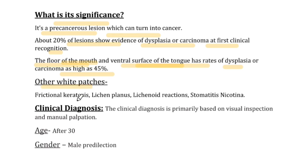Other white patches such as frictional keratosis, lichen planus, lichenoid reactions, stomatitis nicotina — these are white colored patches but they are not pre-cancerous. That's why Leukoplakia's pre-cancerous nature makes it very important to distinguish.